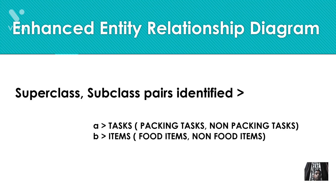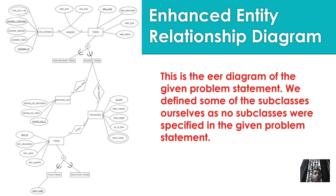In our case study, we have generalized two entities: first, task into two subclasses — packing task and non-packing task — and then items into two subclasses — food items and non-food items. In the EER diagram, both packing tasks and non-packing tasks have task code, task type, and task status, which are attributes of the superclass 'task'. Generalization is represented through an arrow pointing towards the subclass. For items, food items and non-food items both inherit item ID, item value, and item quantity, while food items additionally have an expiry date attribute.